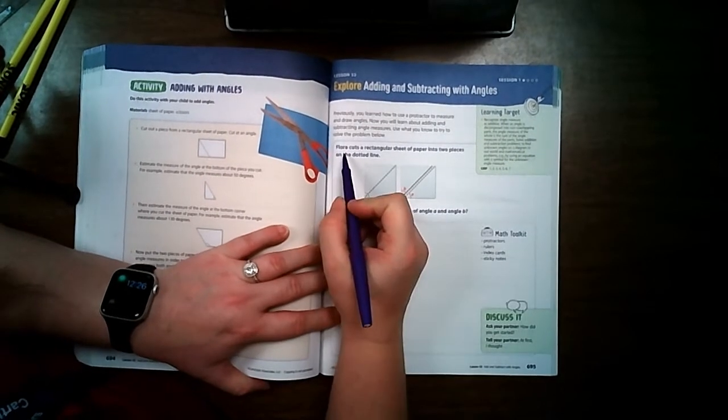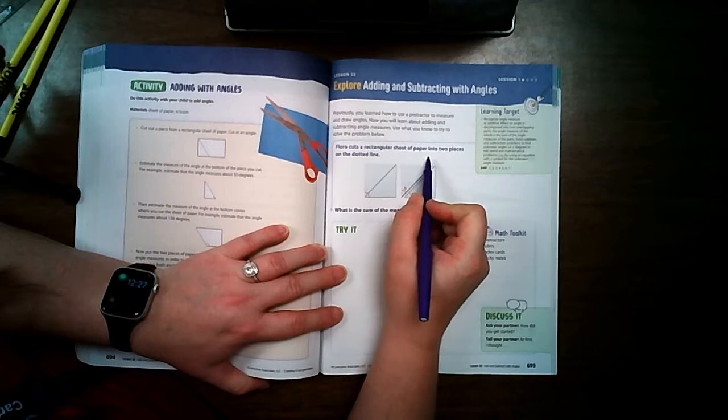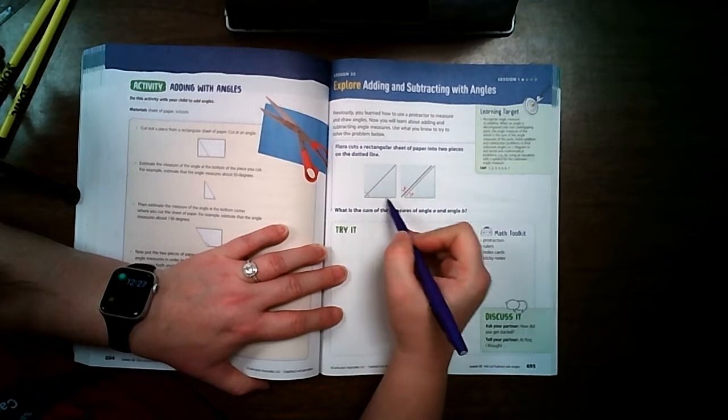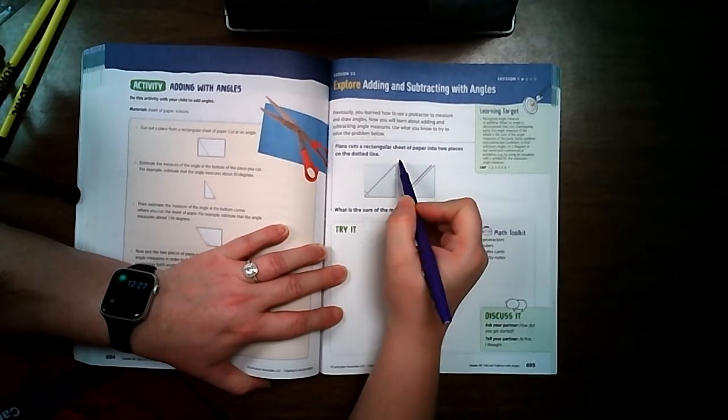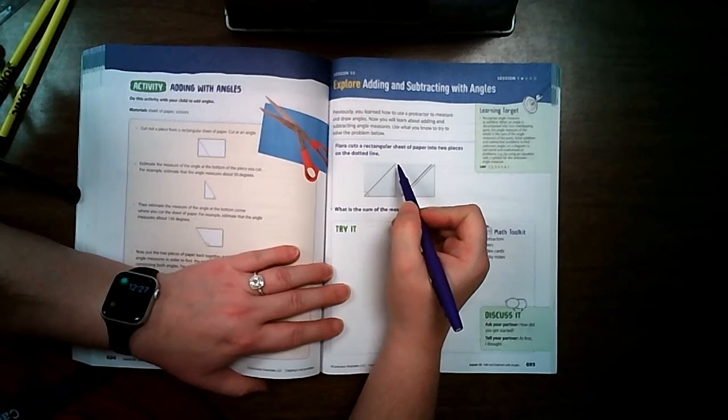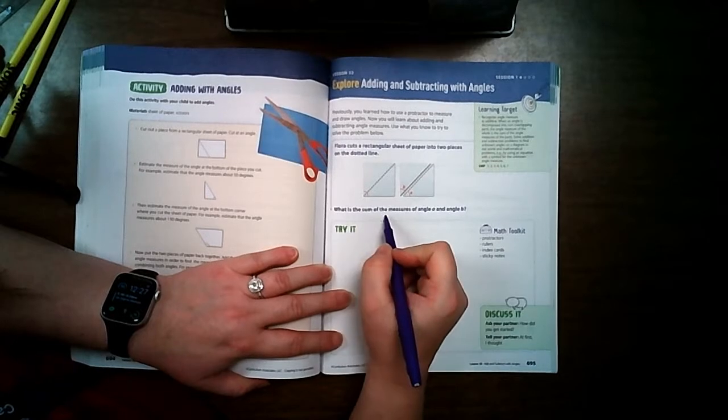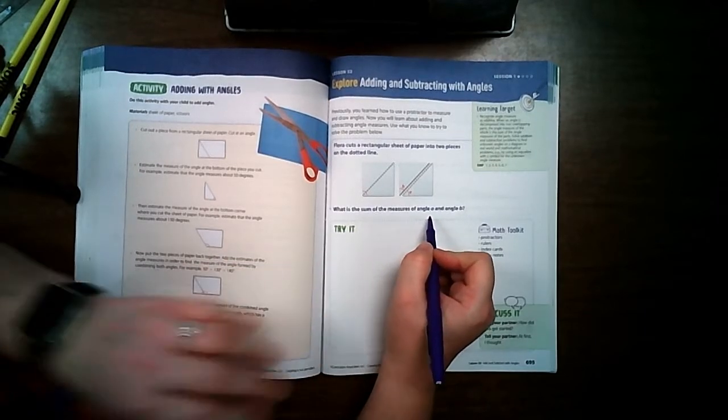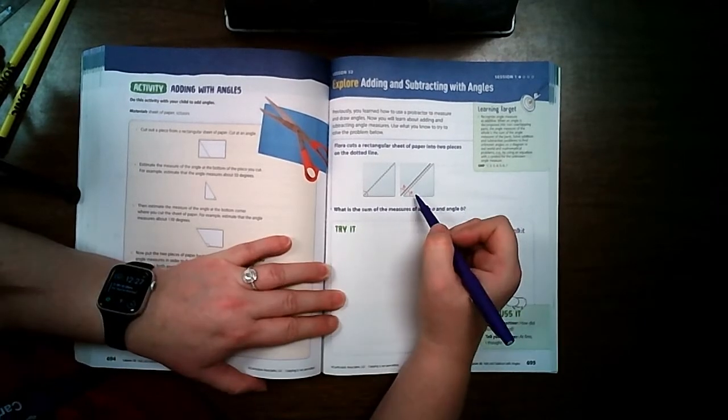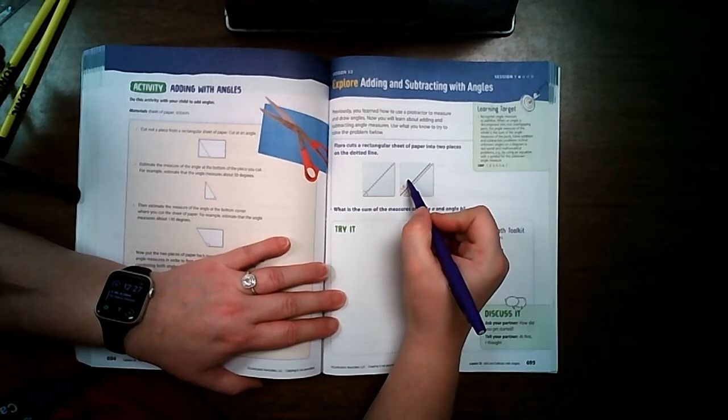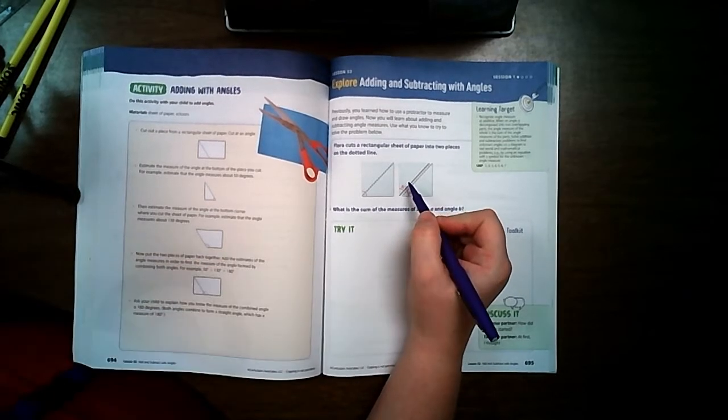On this it says, Flora cut a rectangle sheet of paper into two pieces. So here's her sheet of paper and she cut it diagonally right here. And now she has two pieces of paper. What is the sum of the measure of angle A and angle B? They want to know if I add this angle and this angle together, what do I get?